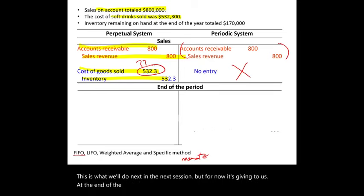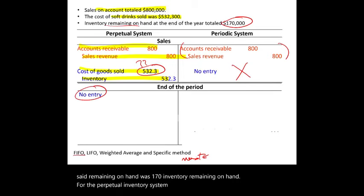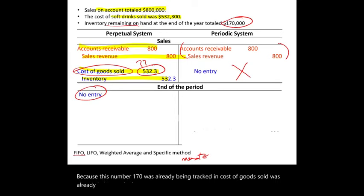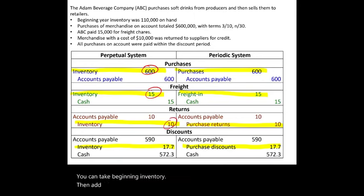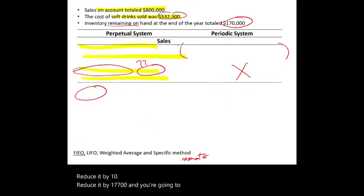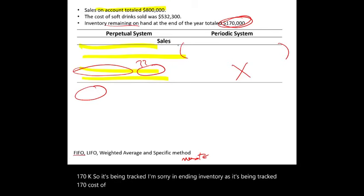At the end of the period, the company counts their inventory, and inventory remaining on hand was $170,000. Under the perpetual inventory system, no adjusting entry is needed because the $170,000 ending inventory and cost of goods sold were already being tracked continuously as purchases and sales were made. Beginning inventory plus additions minus reductions have already been tracked, giving us ending inventory of $170,000.